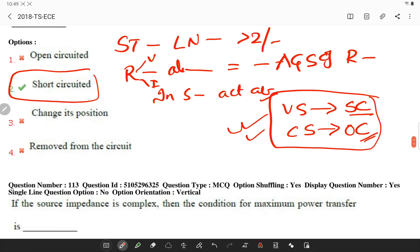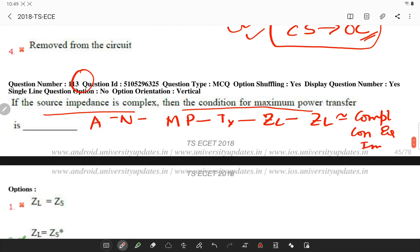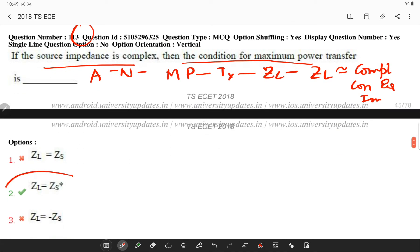If the source impedance is complex, then the condition of maximum power transfer theorem is, so in an active network, it can be stated that maximum power is transferred to a load when the load impedance is equal to the complex conjugate equivalent impedance of the network viewed from the terminals. This is the condition.